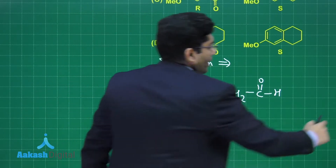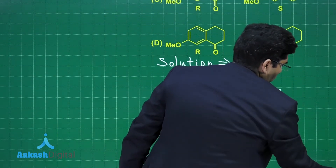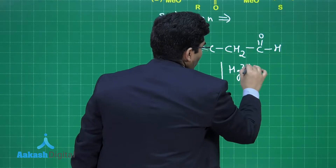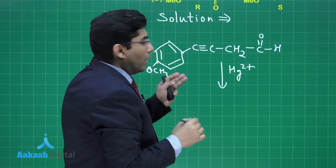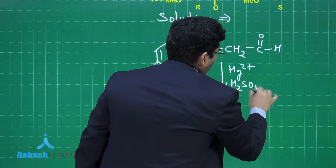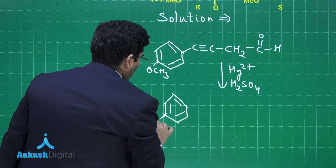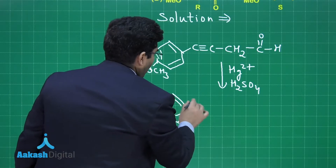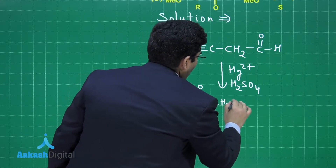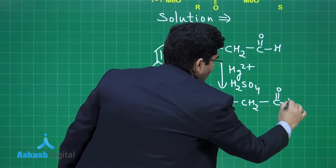Step 1: Add Hg2+ with H2SO4. We know that HgSO4 with H2SO4 converts the triple bond into a carbonyl group. The product will have the methoxy group retained, the triple bond converted to a ketone, and CH2 groups with the aldehyde group remaining as it is.